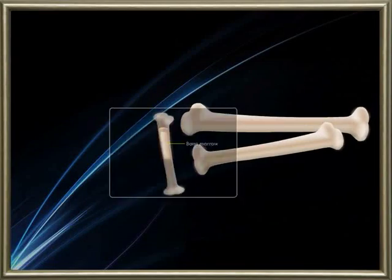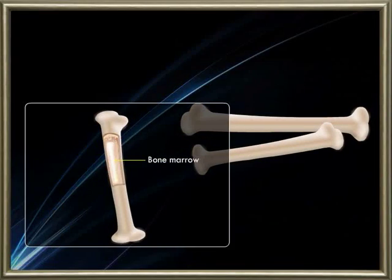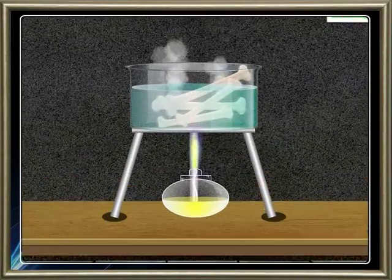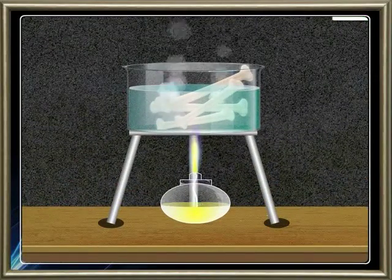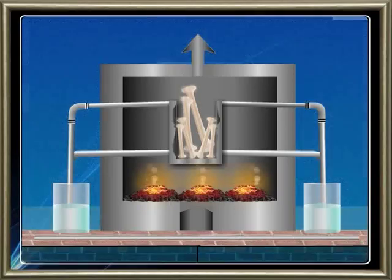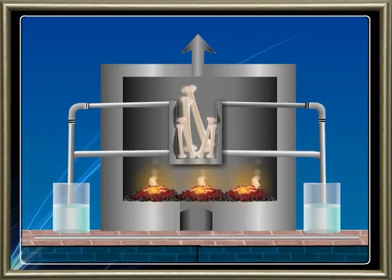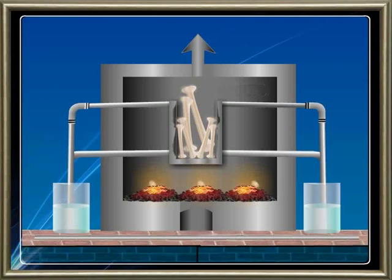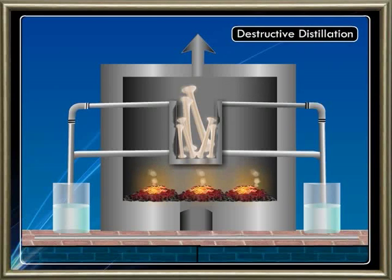In a bone, you will notice a gelatinous and fatty matter. To remove these, bones are boiled. The clean bones that are devoid of fatty substances and gelatinous matter are placed in an iron retort. These are heated in the absence of air. This process is called destructive distillation.